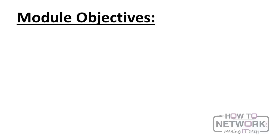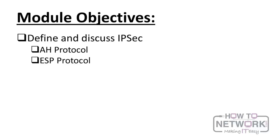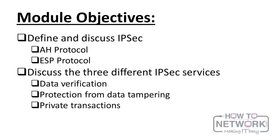We're going to talk about IPsec — defining and discussing what it is — and then talk about two protocols: AH and ESP. We're also going to discuss three different services that IPsec provides: data verification, protection from data tampering (getting into that integrity), and private transactions, going along with confidentiality. All of this supports availability.